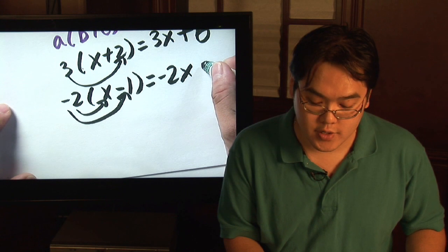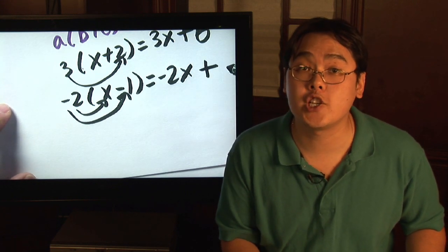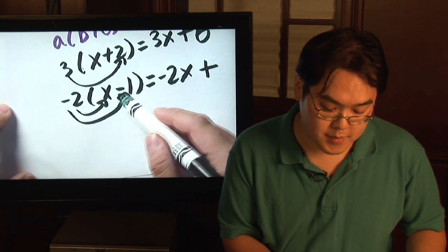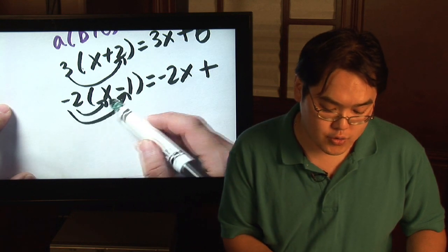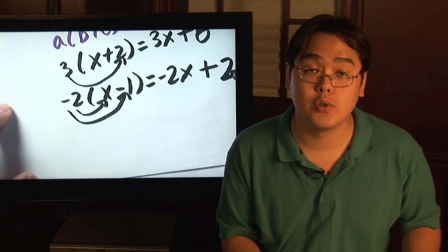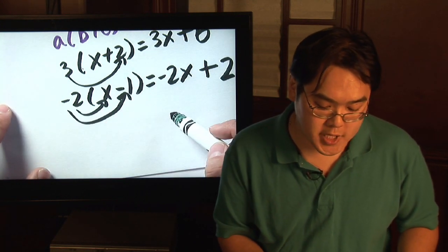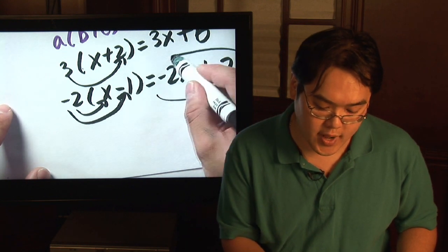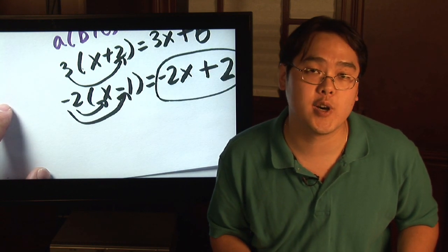So instead of subtraction that you might expect, it's actually going to be addition. So negative times a negative is going to be positive and 2 times 1 is going to give you 2. So that means negative 2 times x minus 1 is going to give you negative 2x plus 2 as your final result.